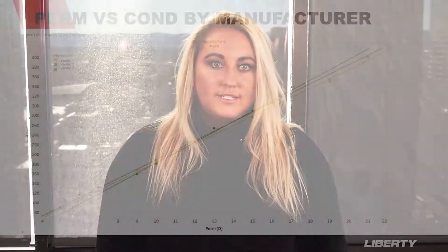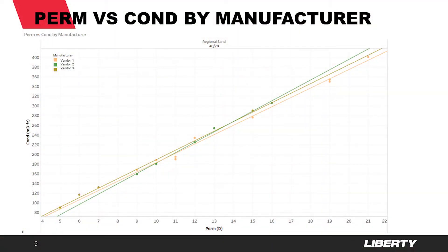We can also compare different proppant vendors using this data, as shown in this plot. The information allows for third-party quality control and assists in ensuring the quality of sand provided lives up to the standards that Liberty expects.